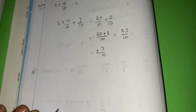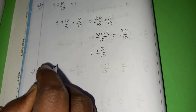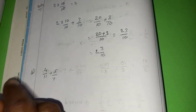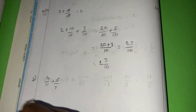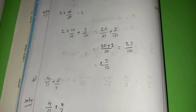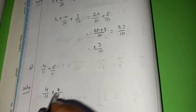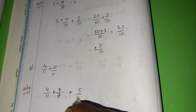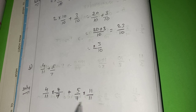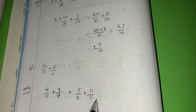Question B: 4 by 11 plus 5 by 7. To add these, I multiply 4 by 11 with 7 by 7 and 5 by 7 with 11 by 11. Multiplying by 7 by 7 or 11 by 11 does not change the value of the fractions. This gives 4 times 7 = 28 divided by 77, plus 5 times 11 = 55 divided by 77.